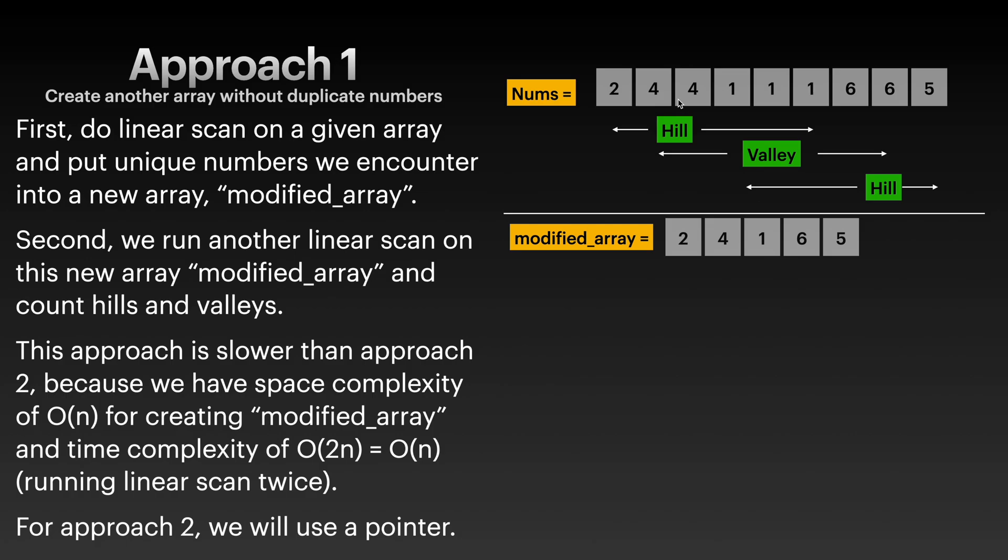Then we have 4, 4, 1, 1, 1, 6. If you look at this, the ones form a valley. We have 1, 6, 6, 5, so these two sixes form a hill. So we have three hills and valleys combined. Now the modified_array will have 2, 4, 1, 6, 5. We can just run another for loop and then determine, count how many hills and valleys we have.